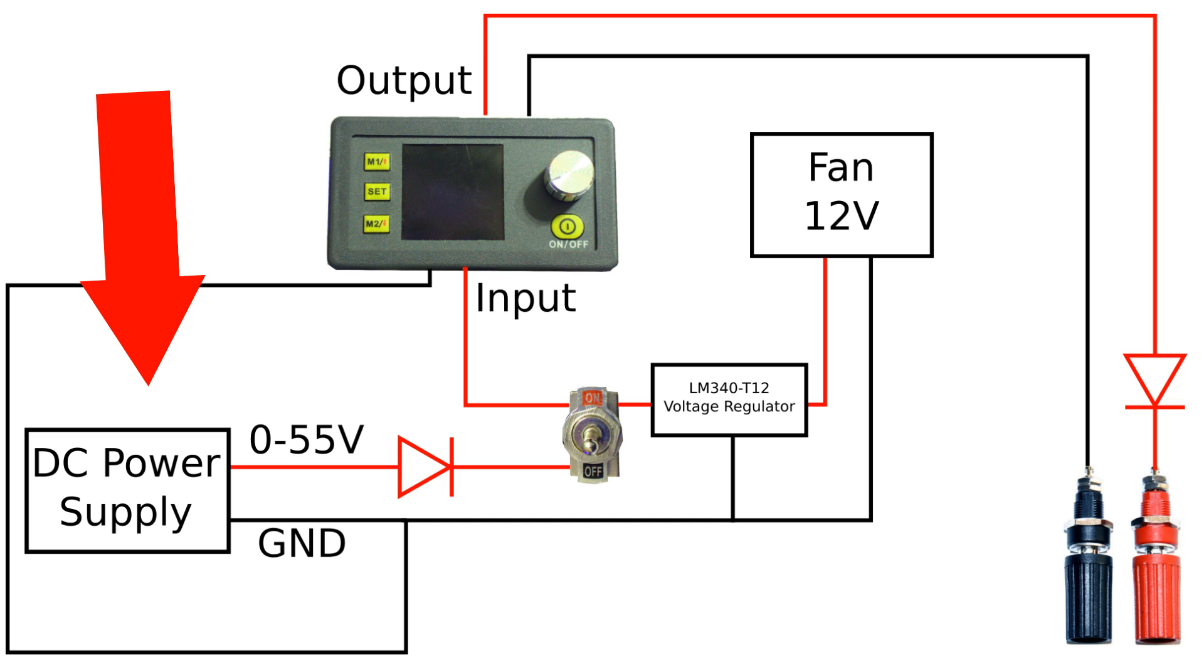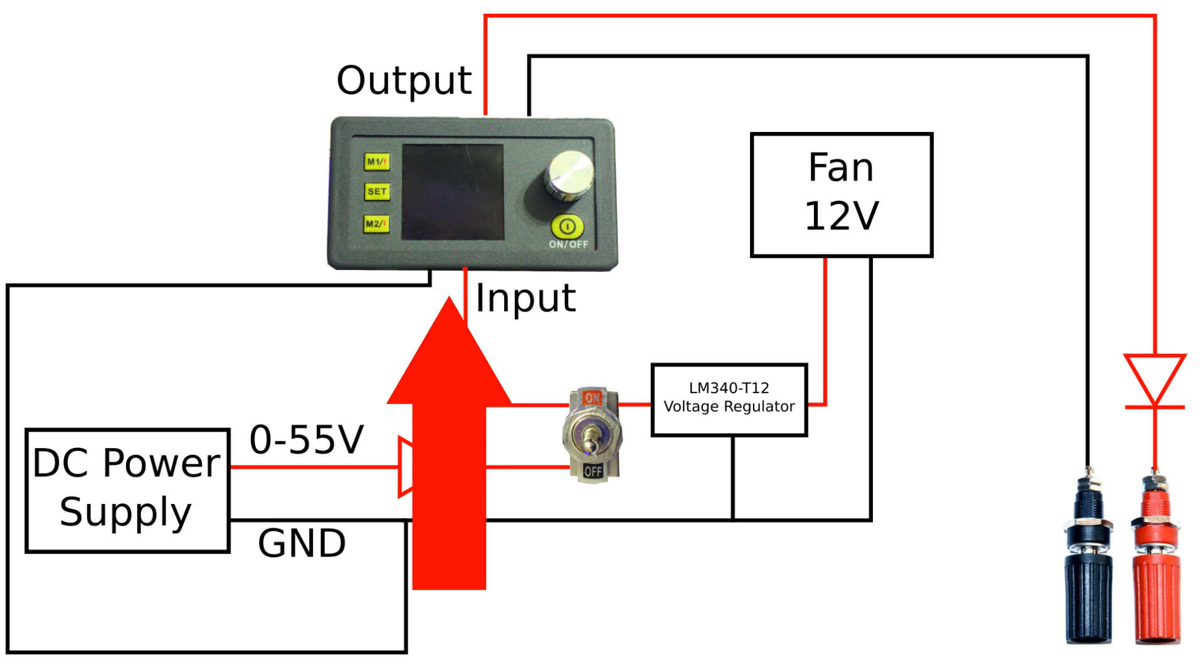The connection from the power supply goes through the diode and then to the switch. From there it is split to the voltage regulator and the fan.